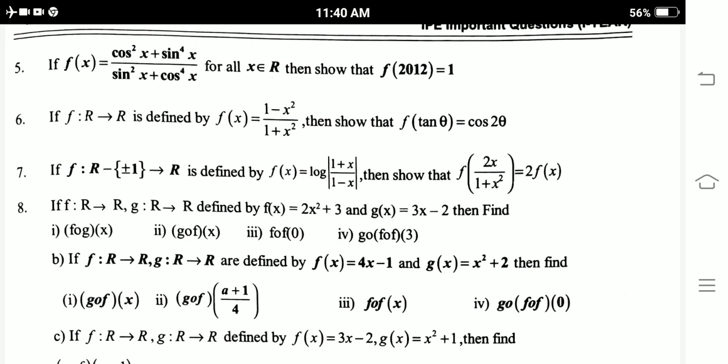Eighth one: f: R → R, g: R → R defined by f(x) = x³ + 3, g(x) = x - 2, then find (fog)(x), (gof)(x), (fof)(x), (fof)(0), (gofof)(3).